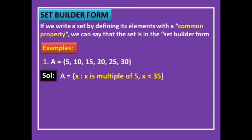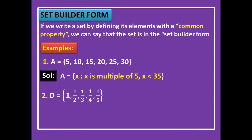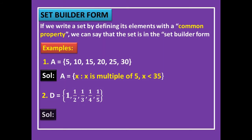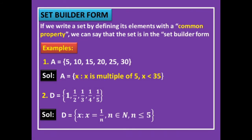Another example: D = {1, 1/2, 1/3, 1/4, 1/5}. Here 1 can be written as 1/1, then 1/2, 1/3, 1/4, 1/5. In the denominators you notice they are 1, 2, 3, 4, 5 — natural numbers. So in set builder form: D = {x : x = 1/n, n belongs to natural numbers and n ≤ 5}. The denominator part is a natural number.